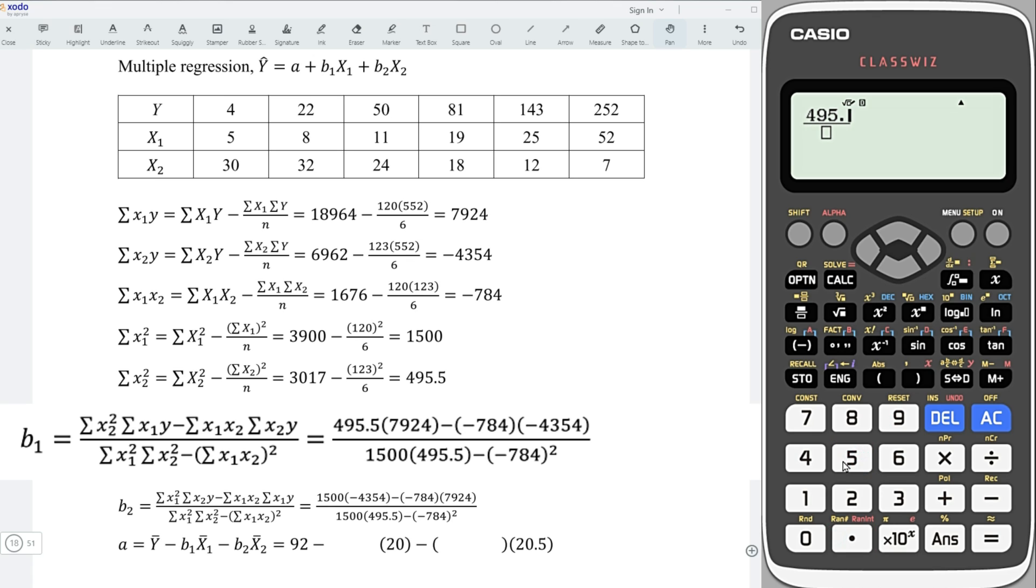495.5, multiply, 7,924, minus, negative 784, multiply, negative 4,354, and divided by,